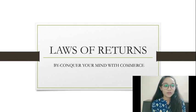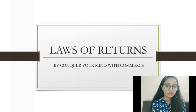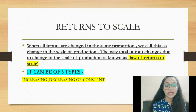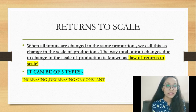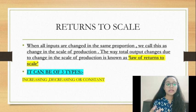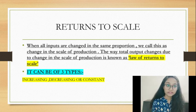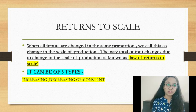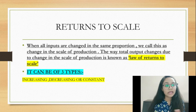Welcome to Conquer Your Mind with Commerce. We start with returns to scale, which is a long-run phenomenon and is part of the chapter 'Laws of Returns.' In the long run, all inputs are variables and can be changed in any proportion. When all inputs change in the same proportion, we call it the scale of production, and the resulting change in output is called returns to scale.